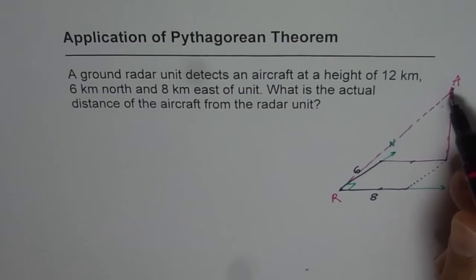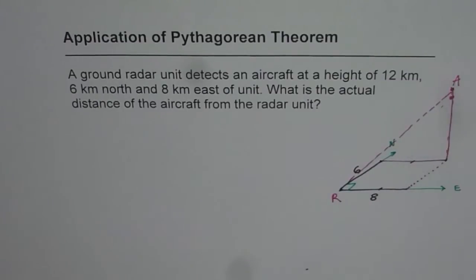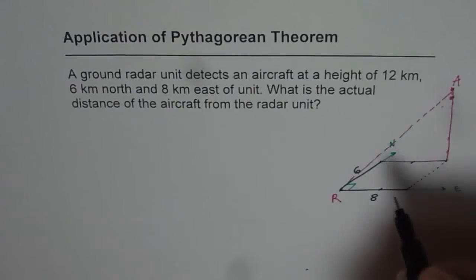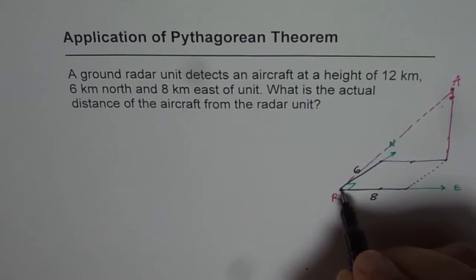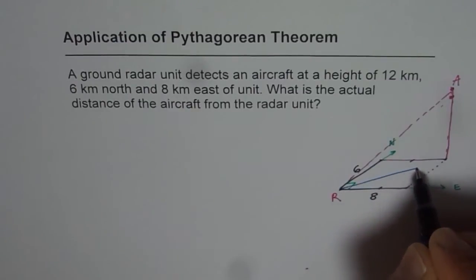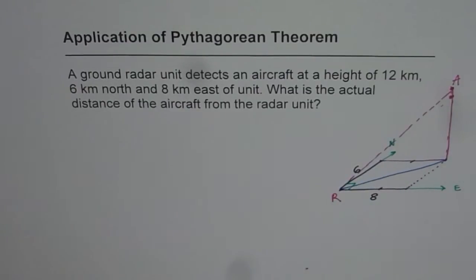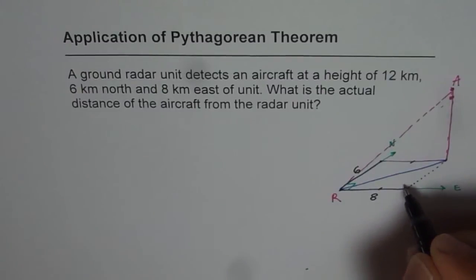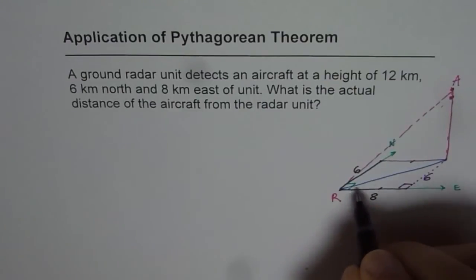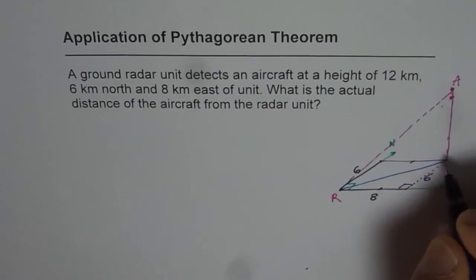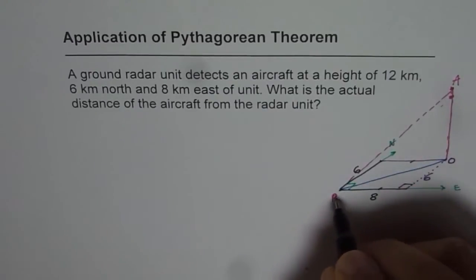Let us say here we have the aircraft A. Now we have to find the length RA. Now to find this length what should we do? First we can find the diagonal along the ground. So this is the diagonal along the ground.